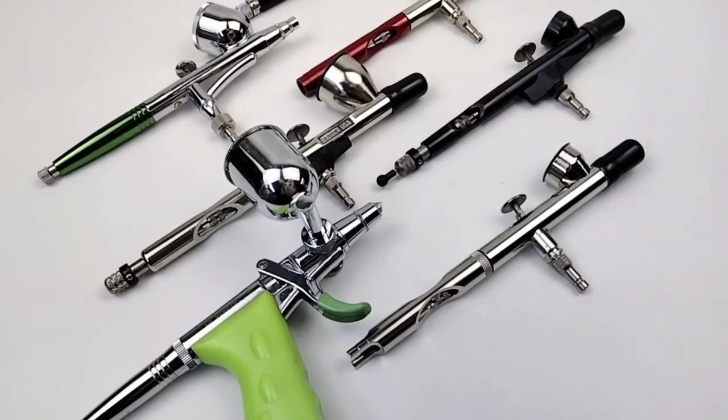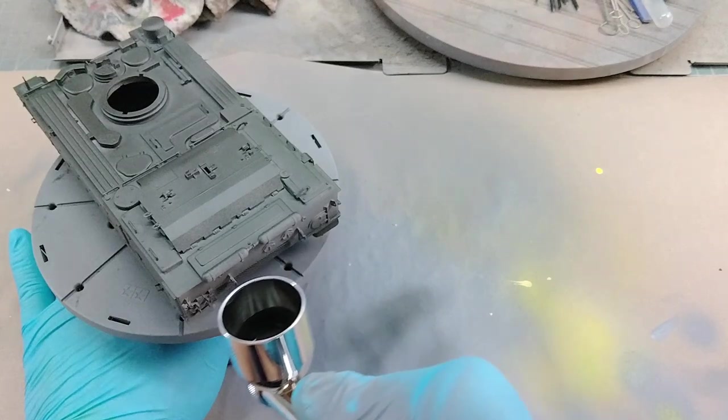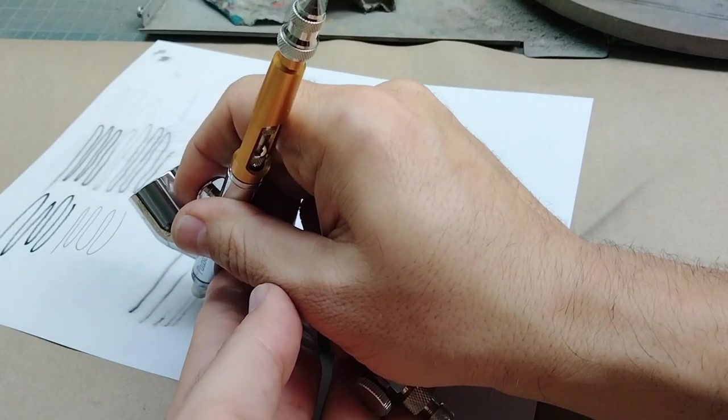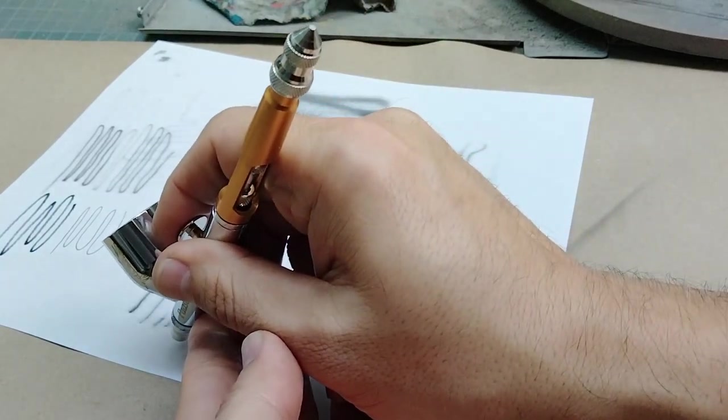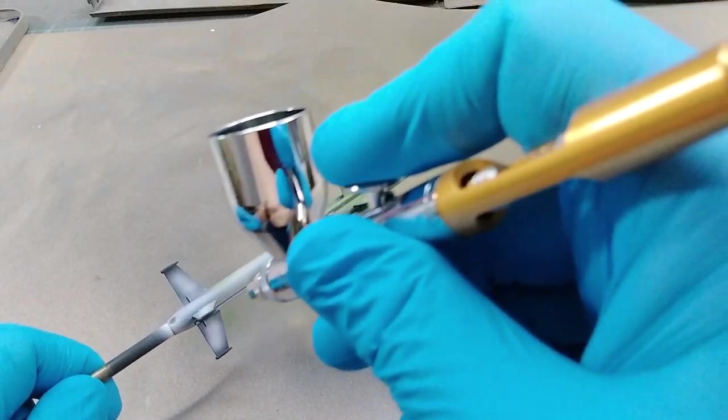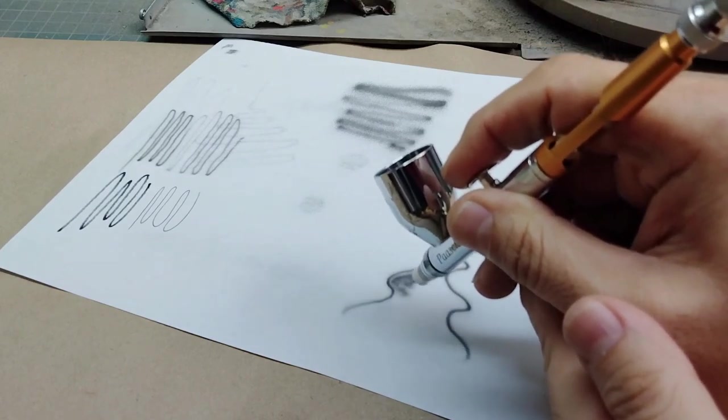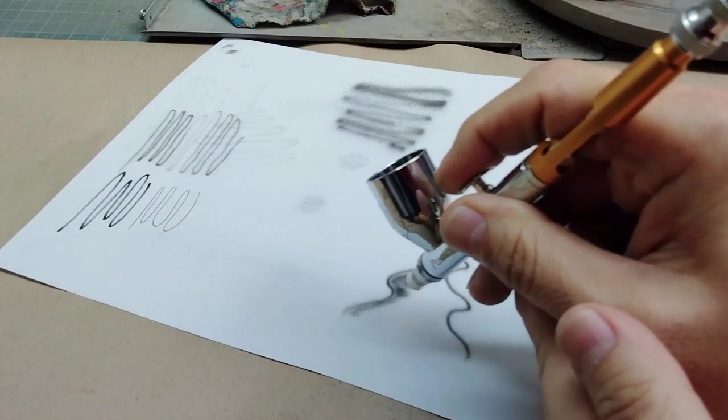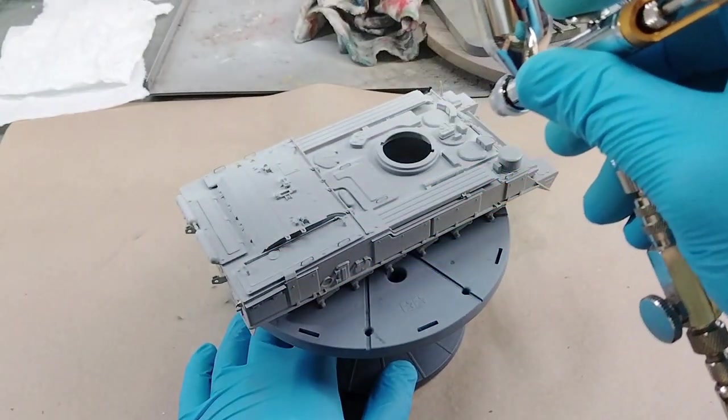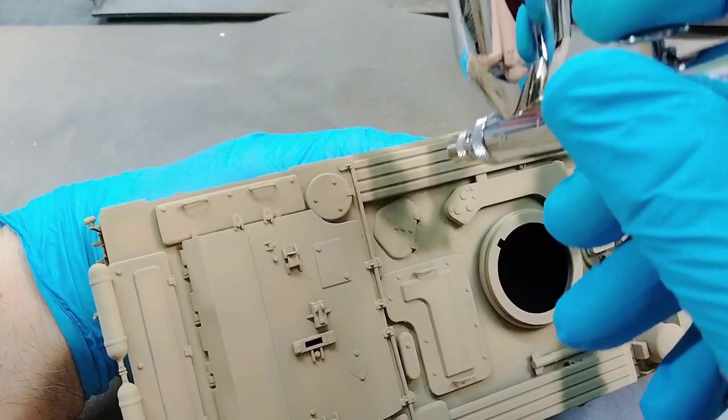No one airbrush can do every type of airbrushing task for scale modeling, but a double action gravity feed airbrush is about as close as you can get, especially when you're new to airbrushing and you don't want to have to buy several airbrushes to figure out which is the right one. A double action gravity feed is a good place to start. The learning curve might be a little bit longer, but not that much different from even a single action airbrush, and once you get practice with this type of airbrush, you can go all the way from priming a model down to the finest details.